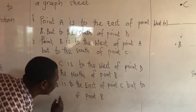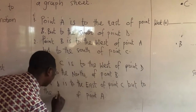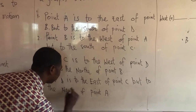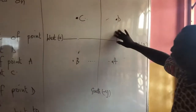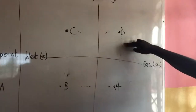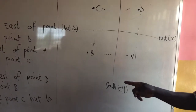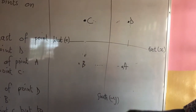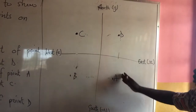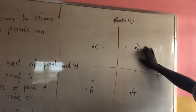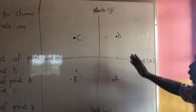To the north of point A — to the north of point A. You can't change it. So, to the north of point A: point D is to the east of point C, but to the north of point A. Because this is the direction — we use this same cardinal point.